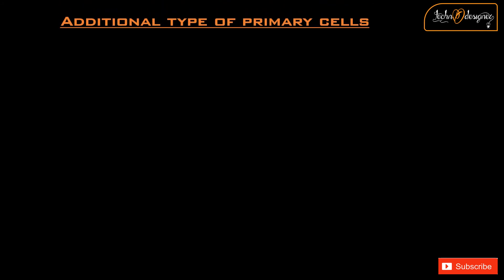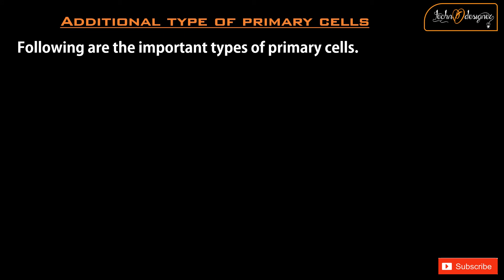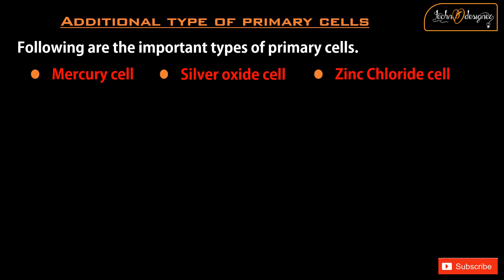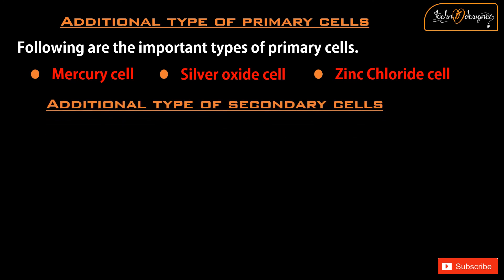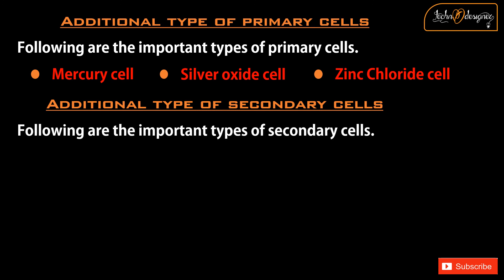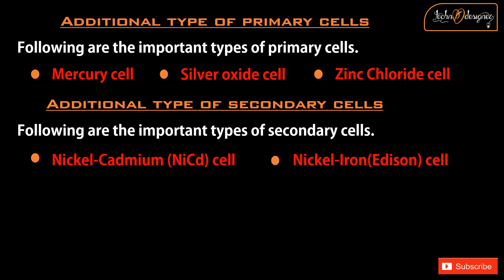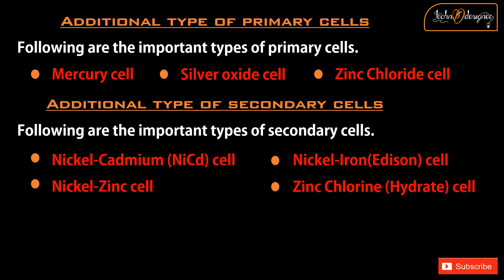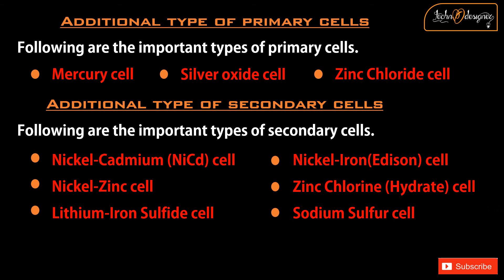Additional types of primary cells: Following are the important types of primary cells — nickel-cadmium cells, Edison cell, nickel zinc cell, zinc chlorine hydrate cell, lithium-iron sulfide cell, sodium sulfur cell, plastic cells, and solar cell.